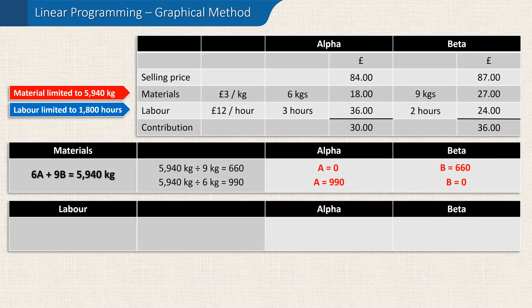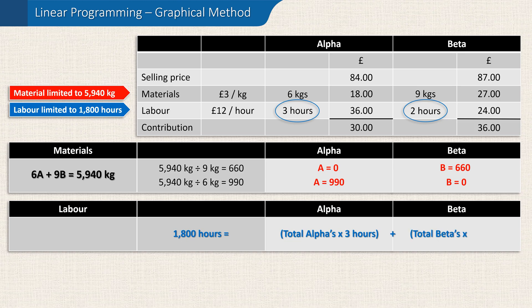Now let's follow this same process for our limited labour hours. Like materials, labour is also a limited resource, with only 1,800 hours available for production. Every alpha requires 3 hours of labour and every beta 2 hours. Whatever the best product mix ends up being, we can assume we'll be using all the labour hours available. Therefore, the total labour hours available — 1,800 — must equal the total number of alphas produced times 3 hours, plus the total number of betas produced times 2 hours. This can be written in shorthand as: 3A + 2B = 1,800 hours.